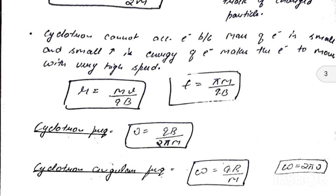The radius formula for the positive ion moving in a circular path is: r = mv / qB, in which r is radius, m is mass of the positive ion, v is velocity of the ion, q is charge on the ion, and B is the magnetic field at that point.